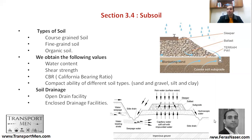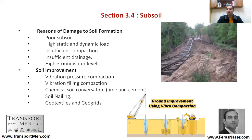The subsoil is the soil and ground below the formation layer and below the ballast. Its main job is to drain water and provide stability for the whole track system. It can consist of coarse-grain soil, fine-grain soil, or organic soil. Key values obtained include water content, shear strength, California Bearing Ratio (CBR), compactability of different soil types, and drainage. You can have an open drain facility — a water channel on the side — or an enclosed drainage facility with a pipe.